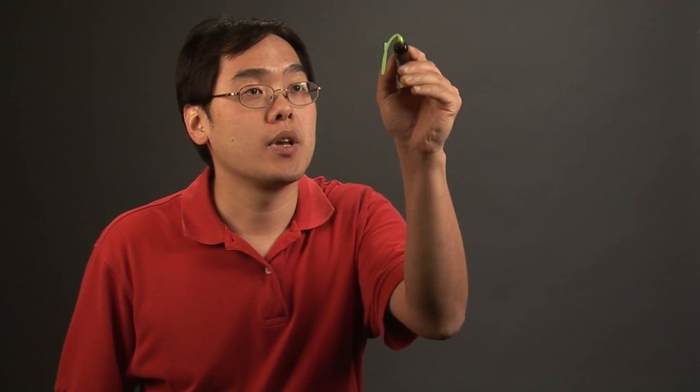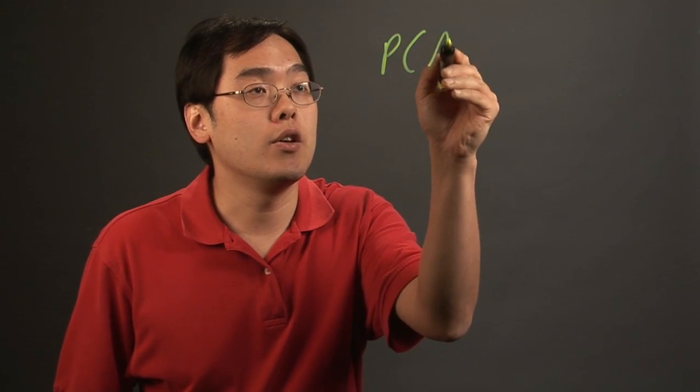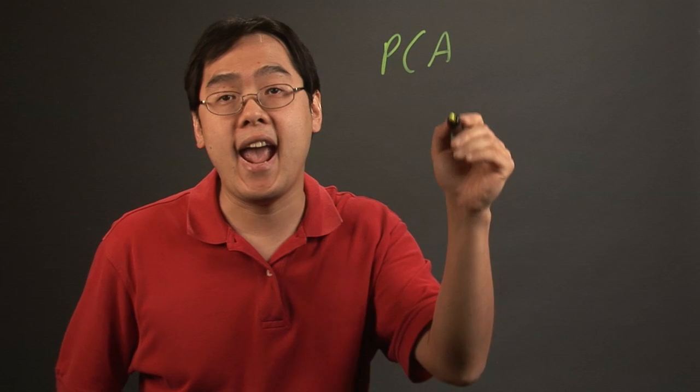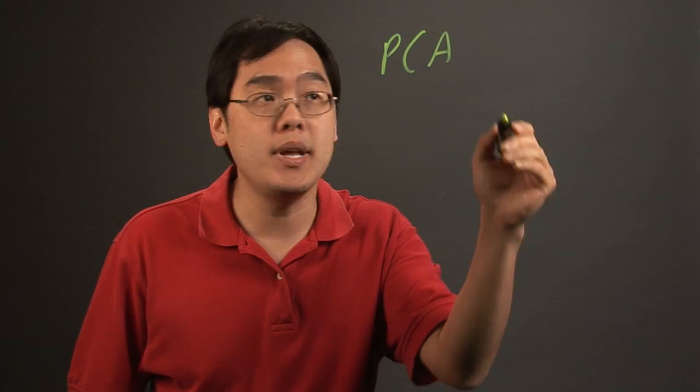Hi, I'm Jimmy Chang and we're here to talk about the Multiplicative Law of Probability. What the Multiplicative Law of Probability addresses is the probability of two events happening at the same time — the probability of A and B.